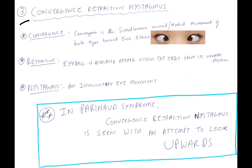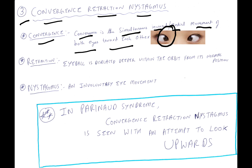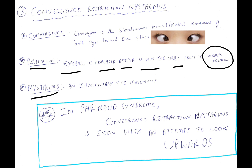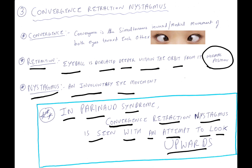Clinical feature number three is convergence-retraction nystagmus. Convergence is the simultaneous inward (medial) movement of both eyes toward each other. Retraction is displacement of the eyeball deeper within the orbit from its normal position. Nystagmus is an involuntary eye movement. In Parinaud syndrome, convergence-retraction nystagmus is seen only with an attempt to look upwards.